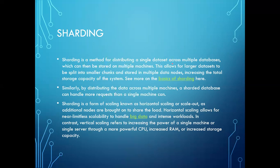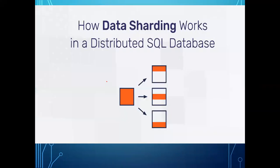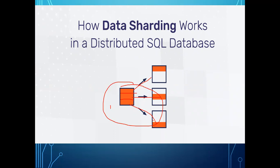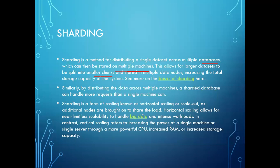Sharding is a method for distributing a single data set across multiple databases, which can then be stored on multiple machines. This allows larger data sets to be split into smaller chunks stored in multiple data nodes, increasing the total storage capacity of the system. For example, I divide a database into three parts — the first shard, the second shard, and the third shard. Each shard is a component containing a part of the data.